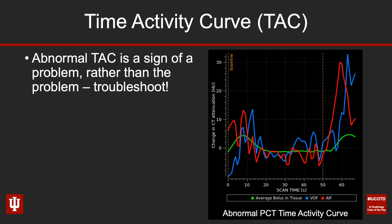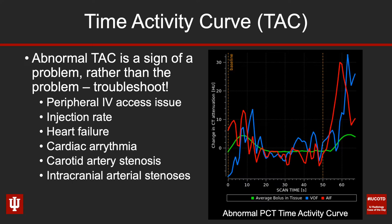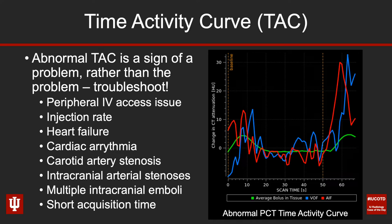A clearly abnormal time activity curve is not the problem itself, but rather a sign of an underlying problem that needs troubleshooting. It may indicate losing peripheral IV access, an incorrect injection rate, heart failure, cardiac arrhythmia, extracranial carotid artery stenosis, or proximal intracranial arterial stenosis. Sometimes a shower of multiple intracranial emboli impairs forward flow. Also, perhaps you didn't image long enough — you can truncate the time activity curve if acquisition is too short, which is why it's recommended to acquire over the course of a minute rather than the previously recommended ~45 seconds.